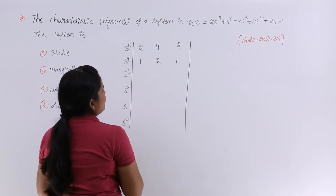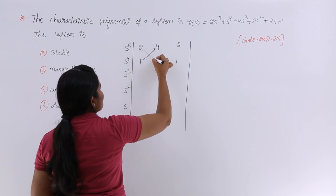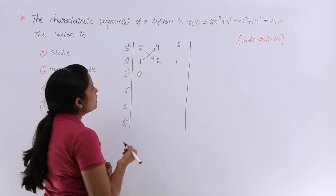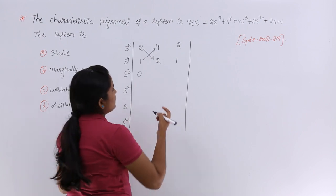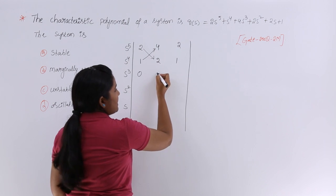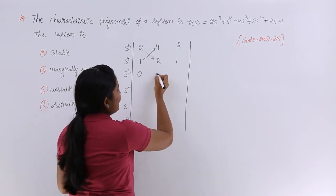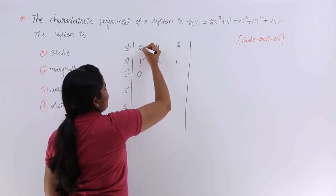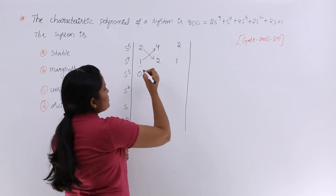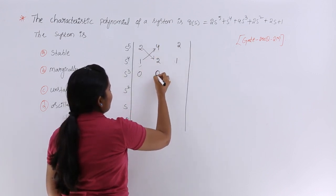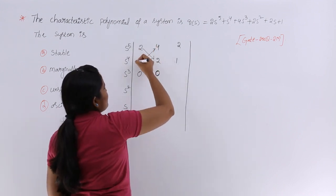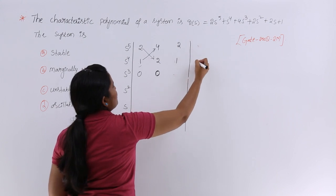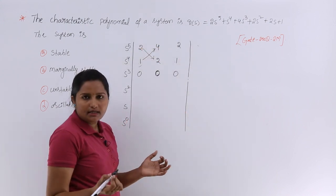To compute the third row: 1×4 − 2×2 = 4 − 4 = 0. The first element of the third row is 0. For the next element: 1×2 − 2×1 divided by 1 = 0. And for the third element: 1×0 − 2×0 divided by 1 = 0. So the entire third row is zero.